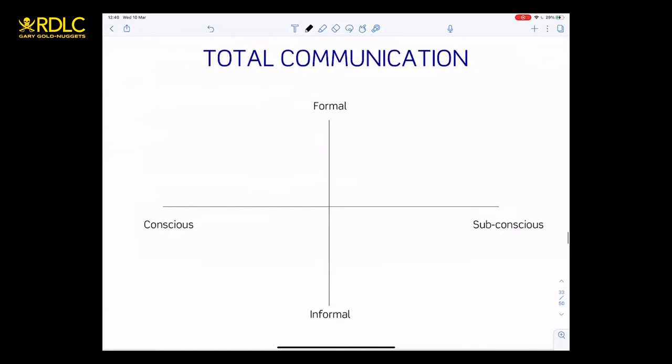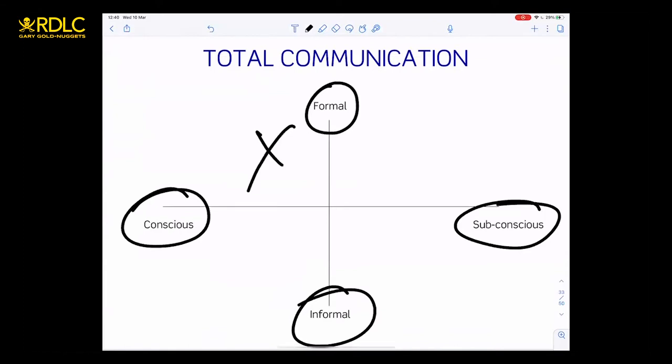So the way communication works is it has four different component parts. Some communication is formal, some is informal. Communication can be subconscious or conscious. So you get combinations: formal unconscious, informal subconscious, etc.